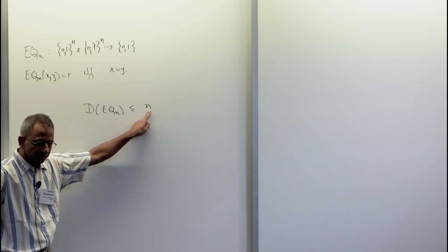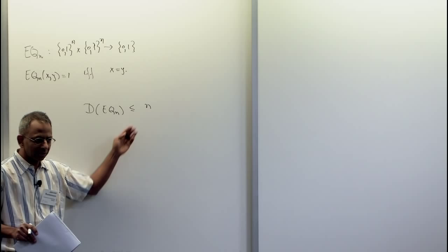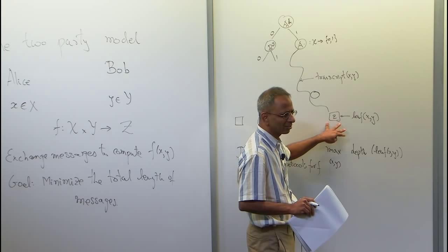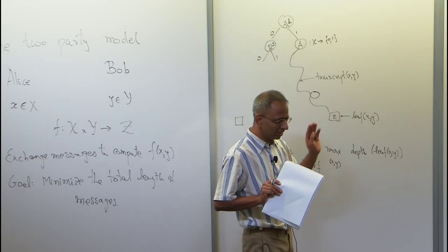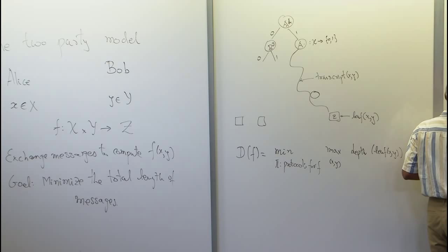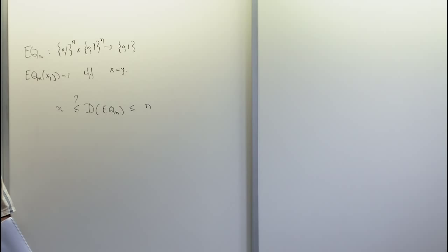The deterministic complexity of the equality function is at most n. For any function where one of the parties has n bits, the deterministic complexity cannot be more than n, because it's always possible for that party to send the entire input to the other. In the end, only one party needs to know the answer — as long as one party knows the answer, we say the problem has been solved.